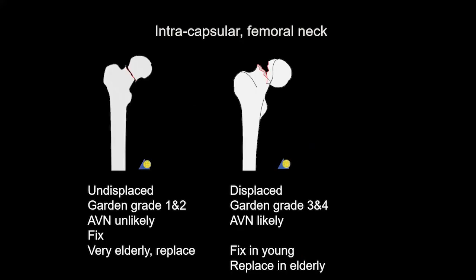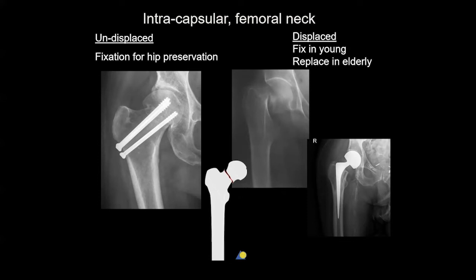For undisplaced femoral neck fractures — that's Garden grade one and two — because of the lack of displacement, AVN is unlikely, and we'd fix those. In the very elderly, because of the risk of bone collapse and poor mechanics and poor bone quality, we'd just replace that with a joint. Here we have some examples: on the far left, you have a slightly valgus impacted fracture, which is a good position for stability. I'm not looking for perfect anatomy, I'm looking for slight valgus impaction, because it makes the head more stable on the neck.